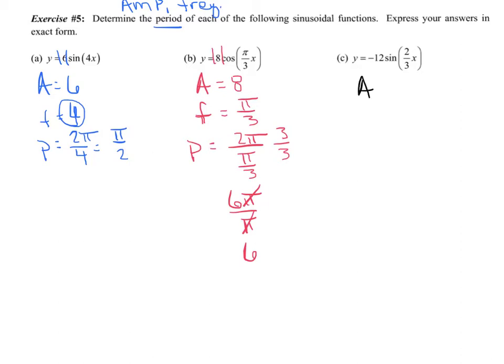On part C, perhaps a little bit of a bear trap. We take the absolute value of negative 12 and get an amplitude of 12. The negative just turns it upside down when we graph it. The frequency is 2/3, and the period is 2π divided by 2/3. Multiply the top and bottom by 3, and we get 6π.